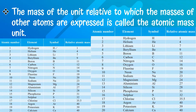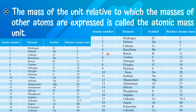The especially important values to memorize are hydrogen, carbon, oxygen, sodium, calcium, and chlorine — these are the most important relative atomic masses you need to know.